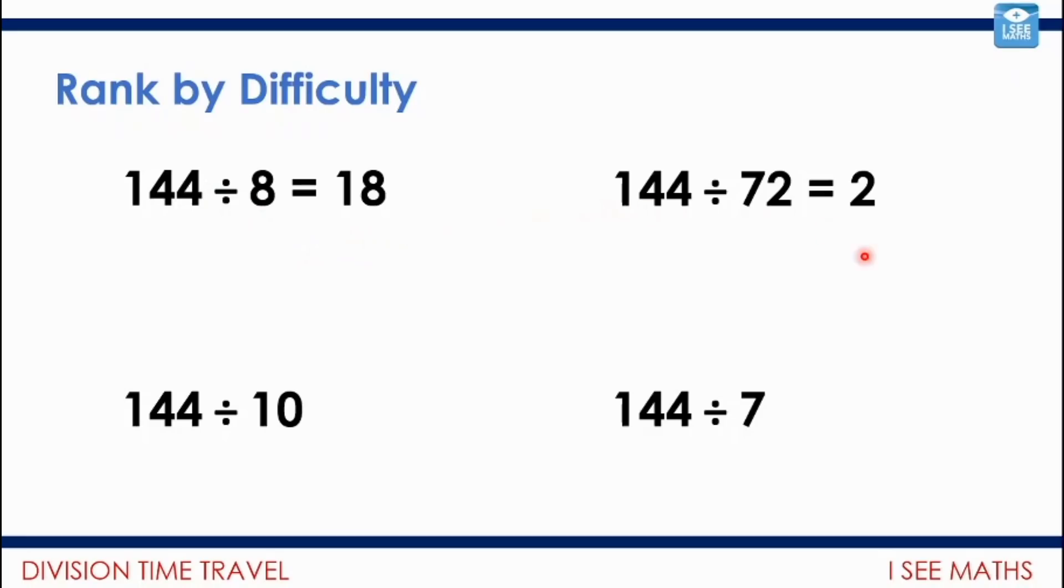Now for 144 divided by 72, how many 72s in 144? Well there are two. This one might seem like the hardest question because I'm dividing by a two-digit number. Though of course 144 divided by 10, because I'm dividing by 10, I can use this rule of how I move the digits to make it 14.4. And what about 144 divided by 7? Well I might know that 7 times 20 equals 140, and so that must mean that it will be 20 remainder 4.